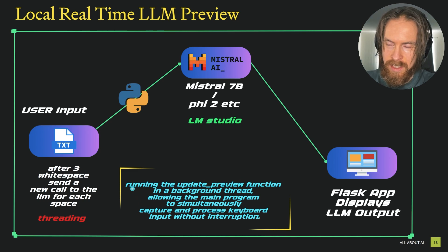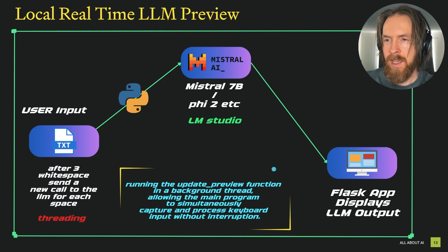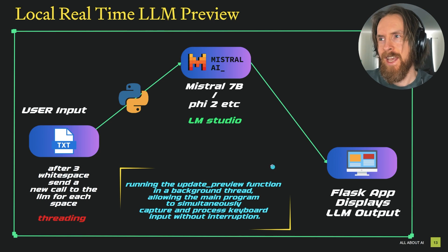The reason we can do this is because we are running the update preview function in a background thread, allowing the main program to simultaneously capture and process keyboard inputs without interruption. So this is kind of like a parallel function.